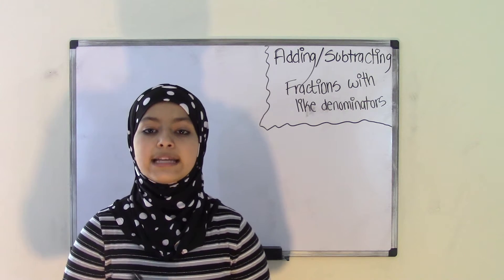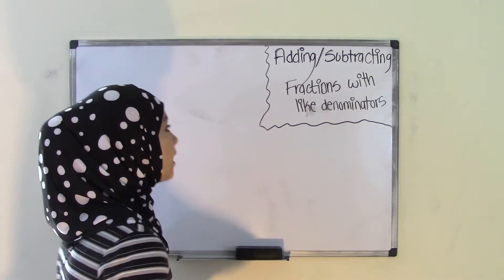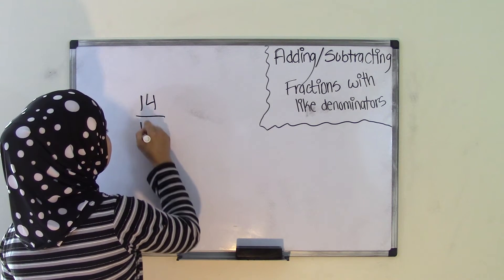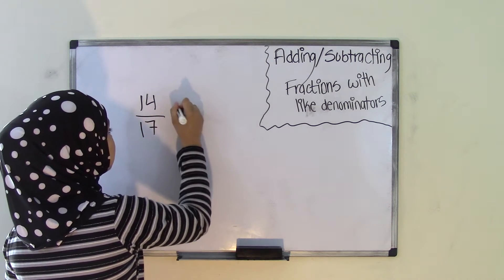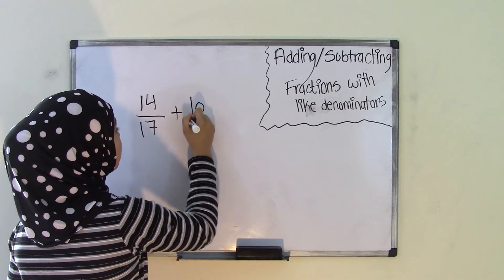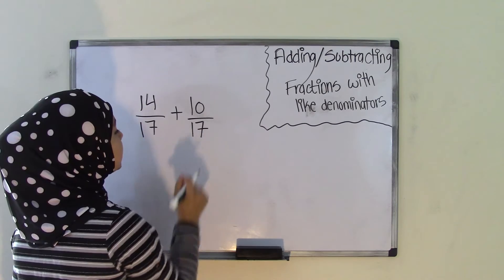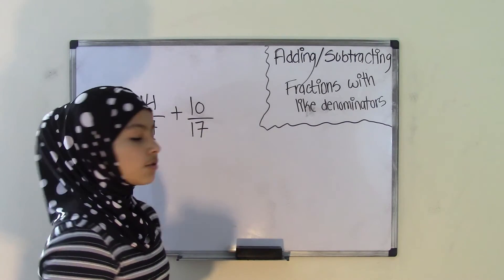So let's first do adding fractions with like denominators. So let's say we have the two fractions, 14 over 17 plus 10 over 17. Now as you can see, 17 and 17 are the same denominators, therefore these are like denominators.